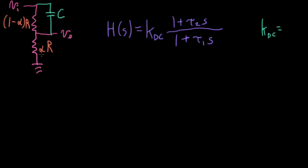So kdc. Well, by the voltage division rule, that would just be alpha r over the total resistance, which is r. So that's just alpha. That's just the response of a standard volume control.